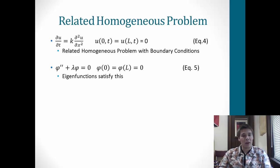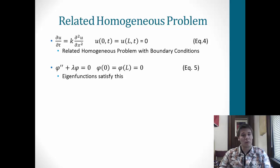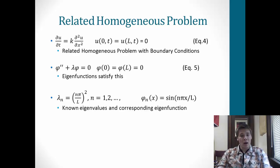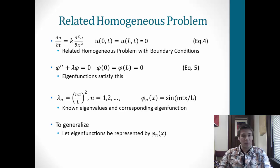Now we need to find our eigenvalues and corresponding eigenfunctions. To solve these, they have to satisfy: φ'' + λφ = 0, where φ(0) = φ(L) = 0. For our case, we know λ_n = (nπ/L)², where n = 1, 2, 3, and so on. This gives us eigenfunctions φ_n(x) = sin(nπx/L). However, for this video I want to remain general, so I'll just call it φ_n(x) for our eigenfunction throughout.